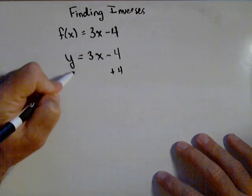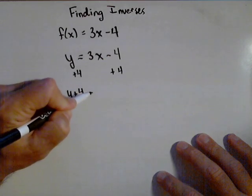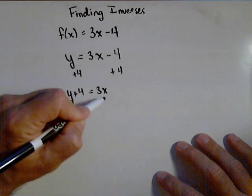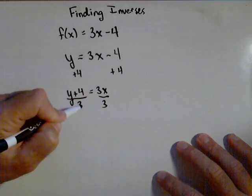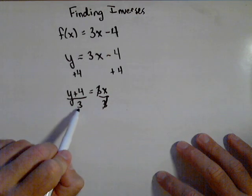So I'm going to go through the steps. I'm going to add 4 to both sides, and I get y plus 4 equals 3x. And I'm going to divide both sides by 3. And I now have my inverse function, x equals y plus 4 over 3.